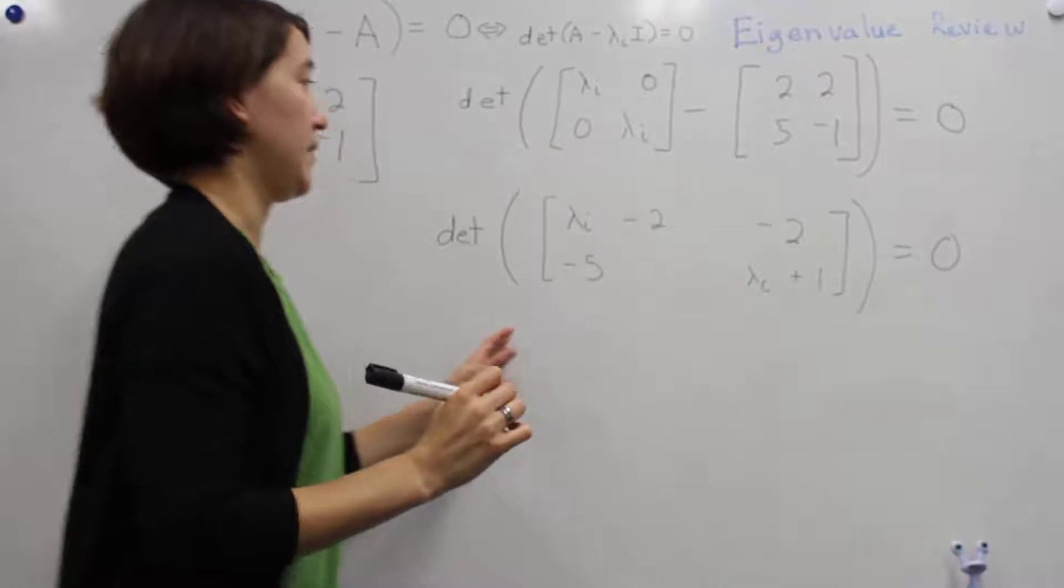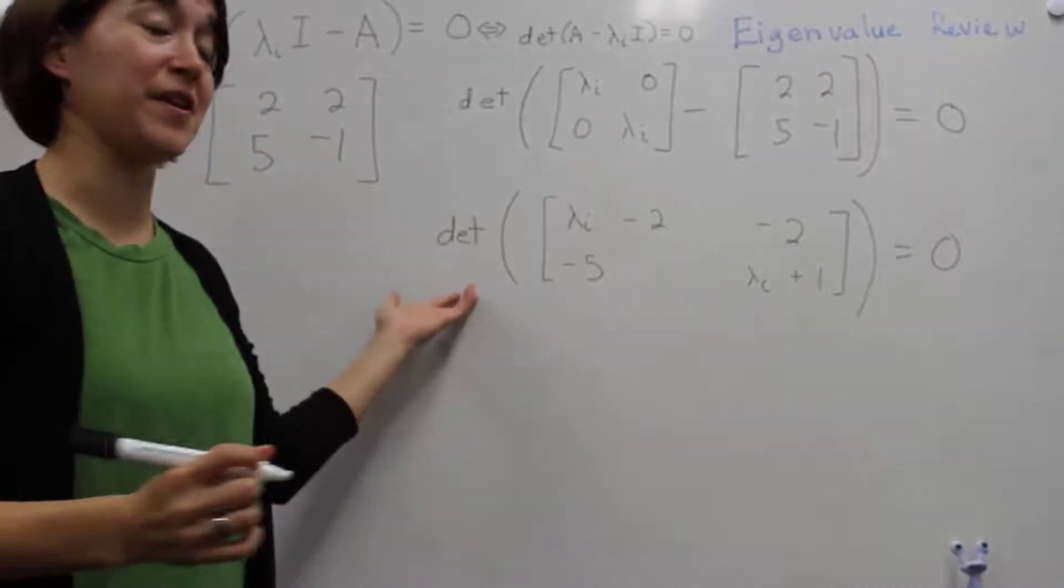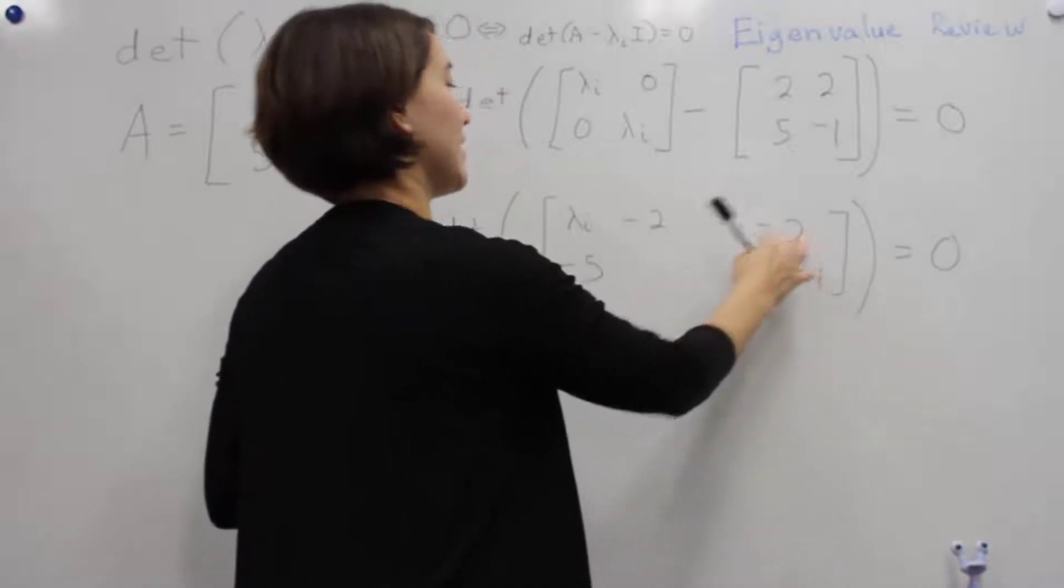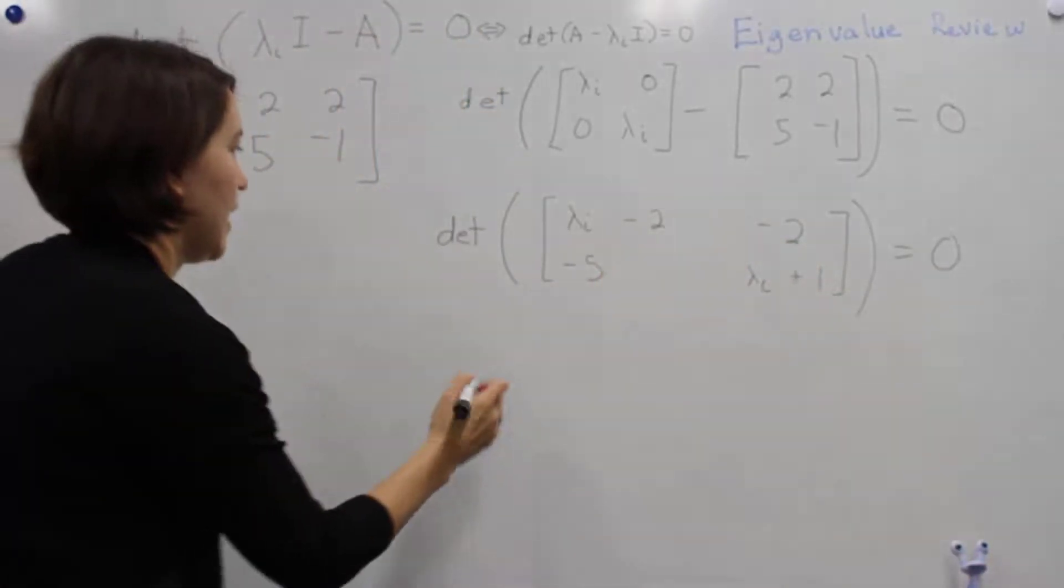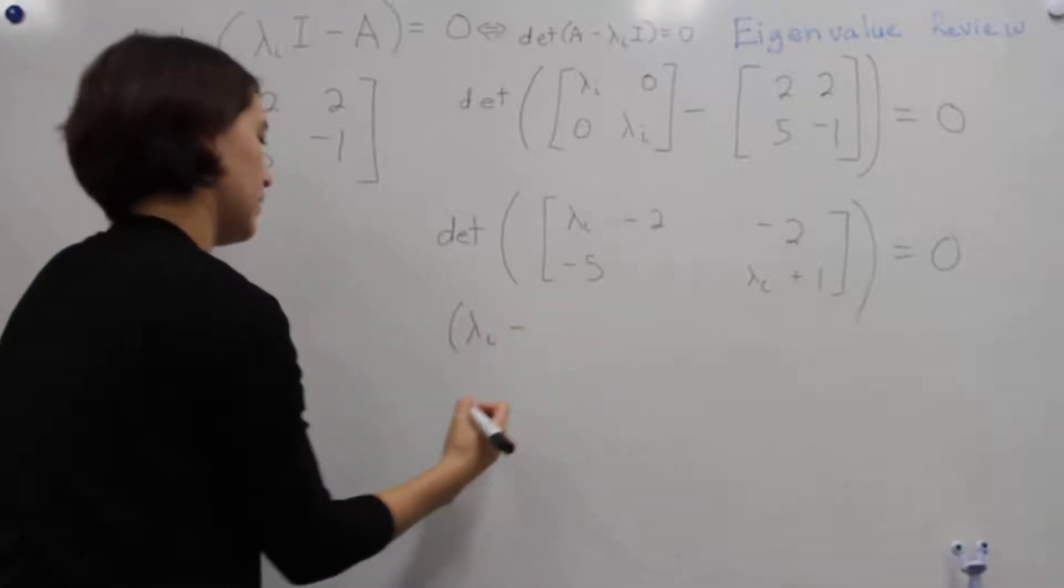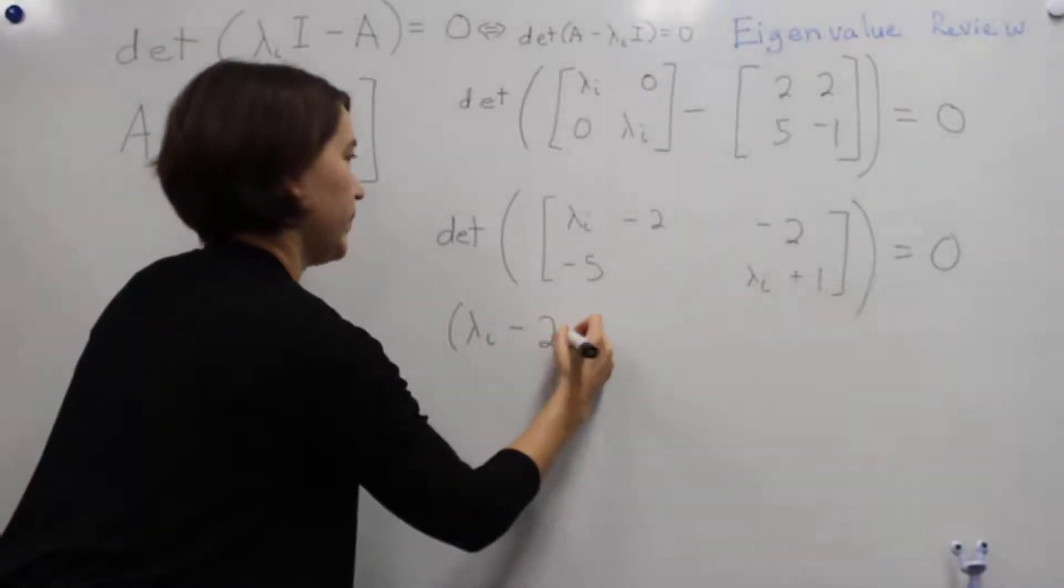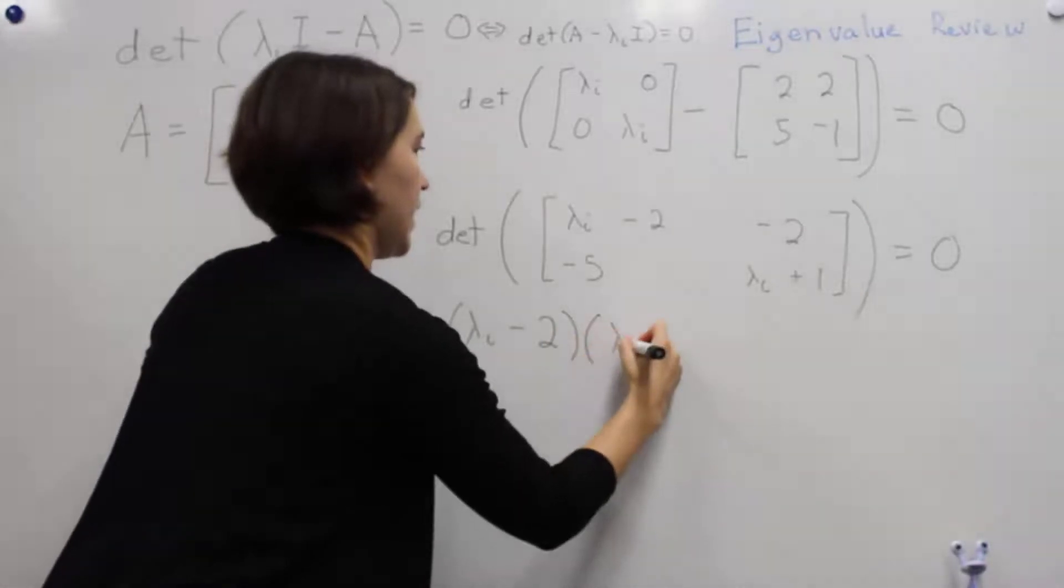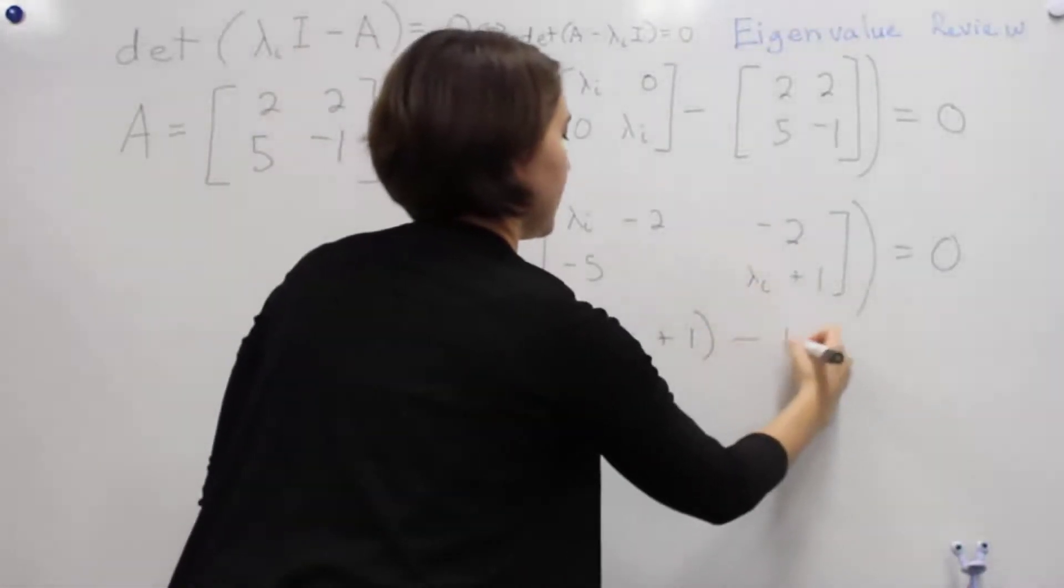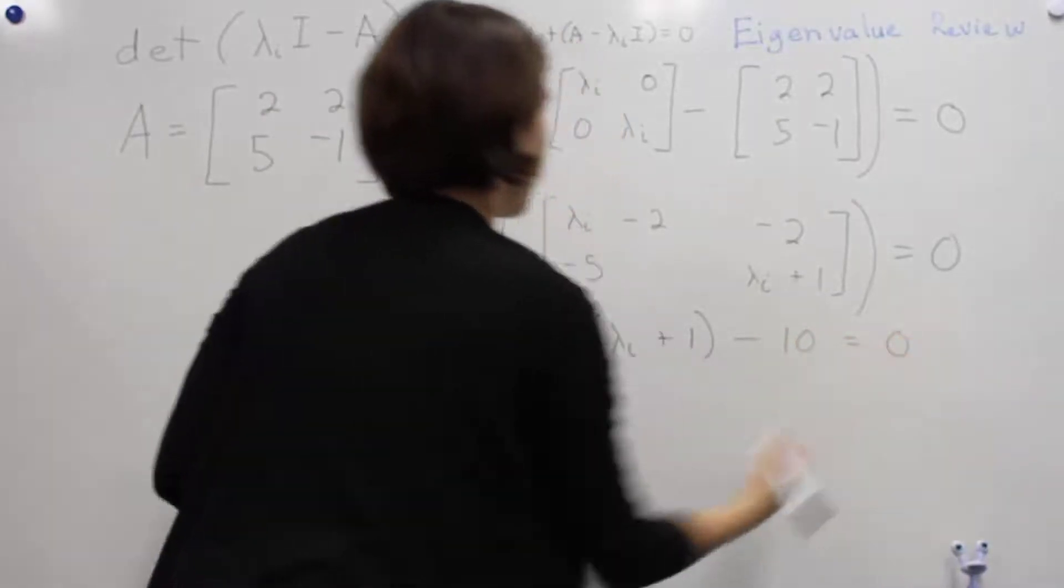All equals zero. Now we have to take the determinant. I just remember it's like a little crisscross, so this times this minus this times that. Let's write that out.